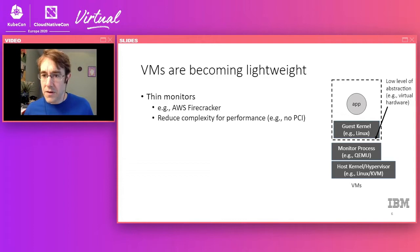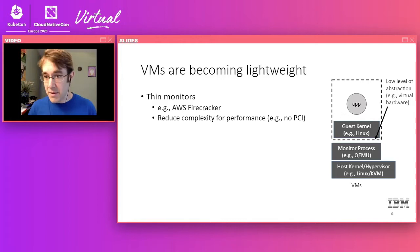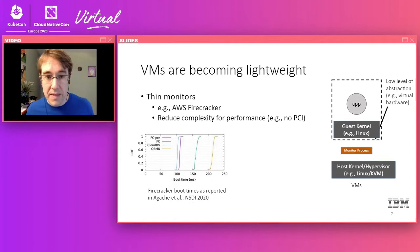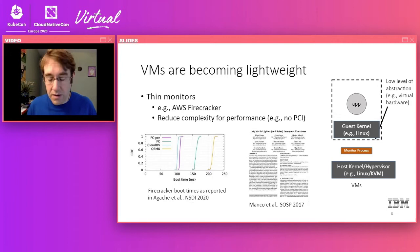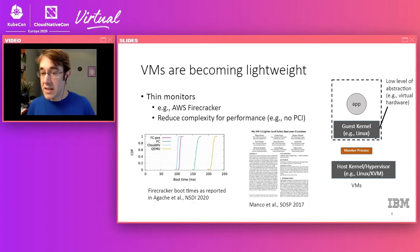The first way to get VMs to be more lightweight is to look at the monitor piece and try to make it thinner. This is what AWS Firecracker does — they take QEMU, cut out things like PCI, reduce complexity, and implement it in a very lightweight way, ending up with much better performance. I have a graph copied from a Firecracker paper from NSDI 2020 showing that Firecracker can boot basically twice as fast as QEMU. This observation is not new — as far back as 2017, there was a paper at SOSP called 'My VM is Lighter and Safer Than Your Container,' which had similar ideas about having a very lightweight monitor process.